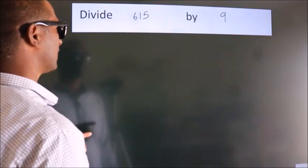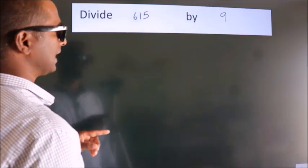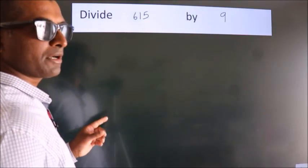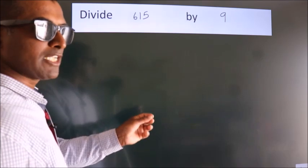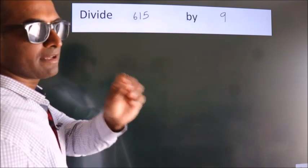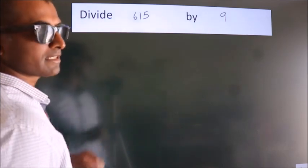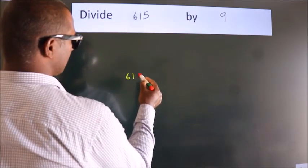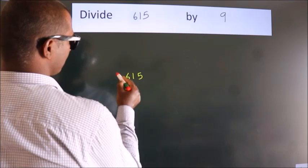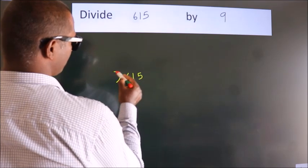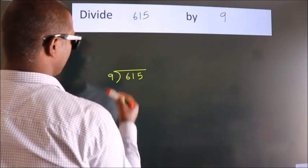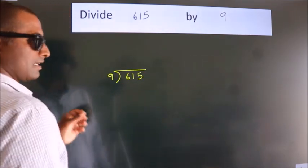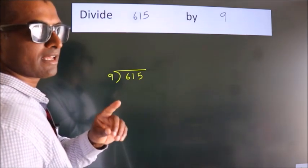Divide 615 by 9. To do this division, we should frame it in this way: 615 here, 9 here. This is your step 1.